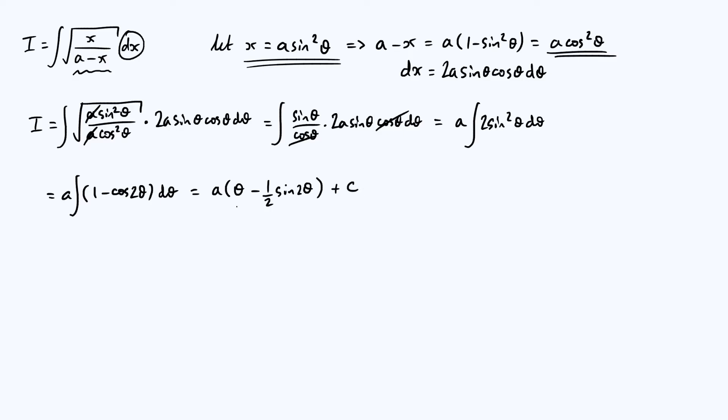So now all we have to do is write this in terms of x instead of in terms of theta. So we're going to have to go back to our original definition of x in terms of theta and invert that relationship. Doing that, we find that theta is the arc sine of the square root of x over a. OK, so that takes care of the first term.